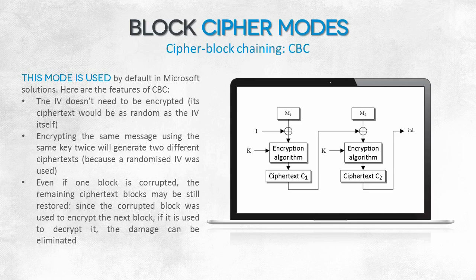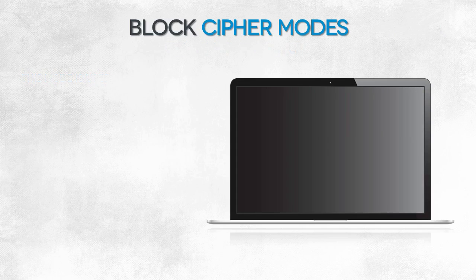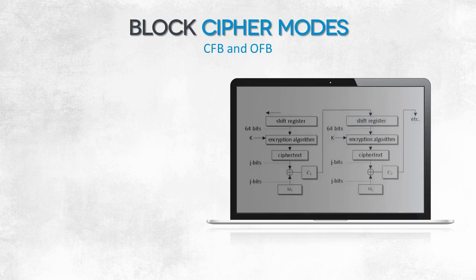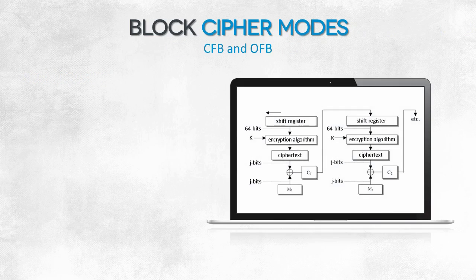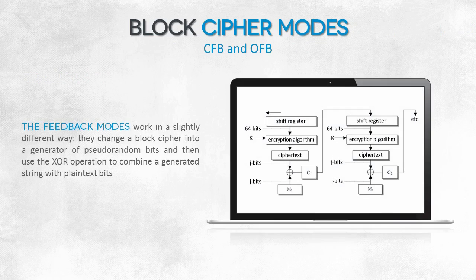The cipher block chaining mode is the default block cipher mode of operation utilized in nearly all Microsoft solutions. Let's now move on to the OFB and CFB feedback modes. The concept here is a bit different in that a simulation is performed that essentially changes a block cipher into a stream cipher. If you generate a key that has the same length as the plaintext, this would in fact create a stream cipher.